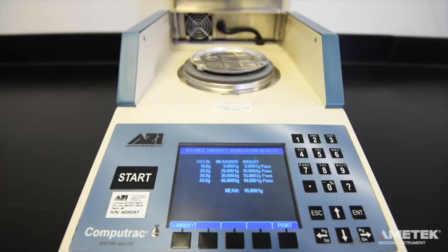If the calibration or verification fails, you will need to try again. If the instrument does not pass after a second or third attempt, refer to the troubleshooting section of the MAX 4000 XL or MAX 4000 manual or contact Ametek Arizona Instrument or your local representative for assistance.